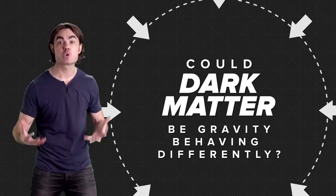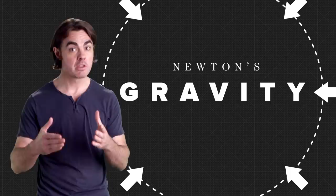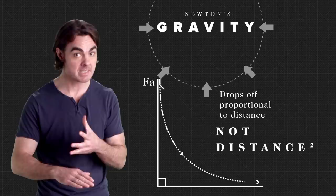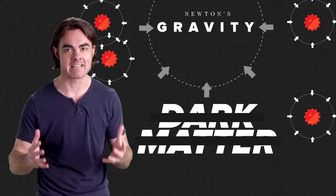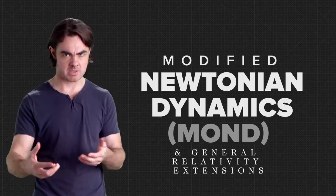Could it be that what we see as dark matter just comes from gravity behaving differently on truly gigantic scales? Well, it turns out that if you make a simple change to Newton's gravity, things work out. Give gravity a bit more staying power, make it drop off proportional to distance instead of distance squared, and then you don't even need dark matter. The stars alone give you plenty of gravity.